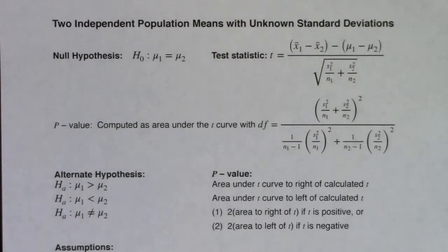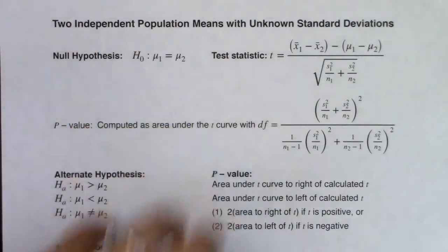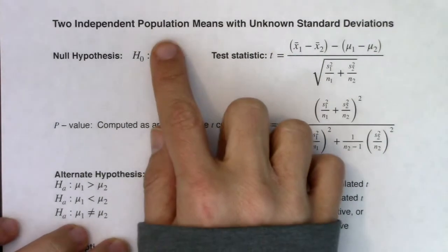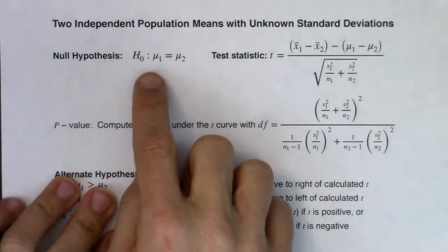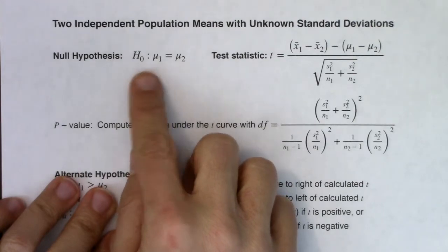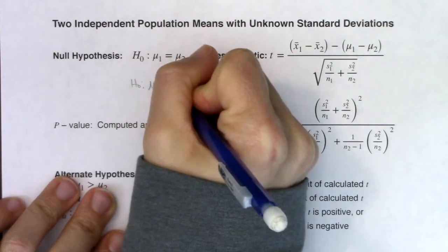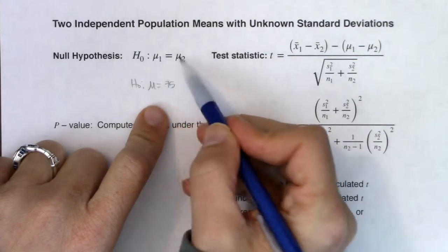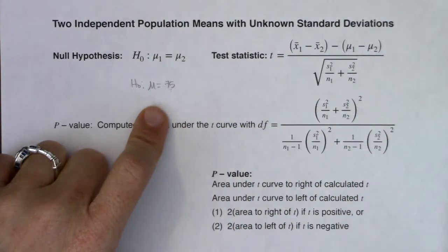In Math 43, we're heading into mean land to do independent populations. We'll do a couple of examples where the populations are independent, then look at paired samples. When I say unknown standard deviations, I mean we don't know sigma — the population standard deviation — but we'll always know s, the sample standard deviation. For mean land, the null has mu1 equals mu2, which is different from Chapter 9 where you had something like mu equals 75.